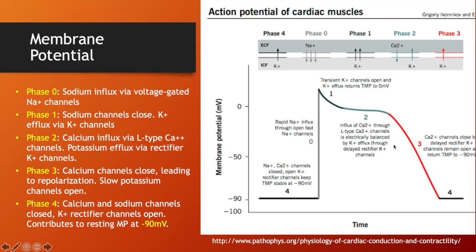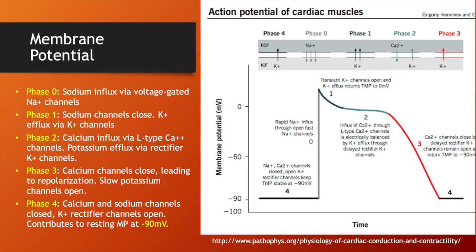In phase three, the calcium channels close, so no more calcium is coming in, and the cell is able to sharply repolarize. The slow potassium channels open, so there is a constant efflux of potassium. Then we go back to phase four, where calcium and sodium channels close and the potassium rectifier channels open, returning to negative 90 millivolts.